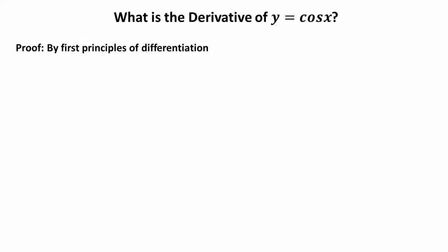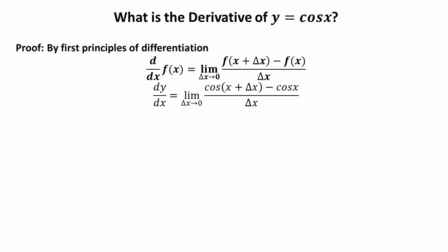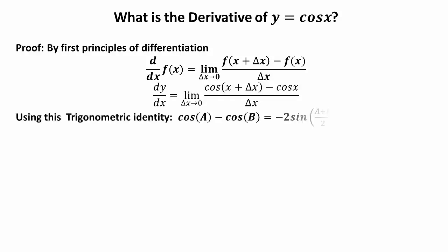Next, what is the derivative of y = cos(x)? To prove this result we will use the definition of derivative. By the first principle of differentiation, dy/dx = limit as Δx→0 of f(x + Δx) - f(x) over Δx. So dy/dx = limit as Δx→0 of [cos(x + Δx) - cos(x)] over Δx.